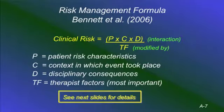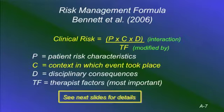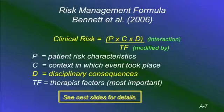Slide by slide, we're going to look at what patient risk factors came up in malpractice suits — who was more likely to have someone bring a suit against them. We're going to look at the context in which the event took place: was it a solo practice, an agency, a hospital? We'll look at the disciplinary consequences and what could actually happen given a risky action. And then therapist factors — the most important — these are our personal toolkit.